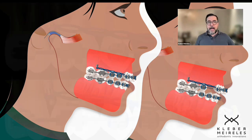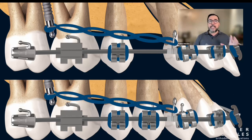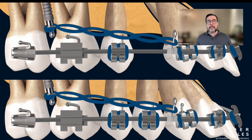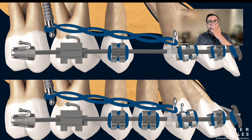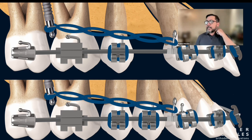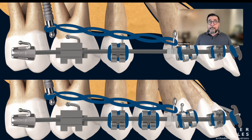The first option is the retraction of the entire upper arch in one piece. We have some indications for that — we must have enough bone distal to the second upper molar for distalization. I need good bone to make the distalization of the upper arch more predictable.